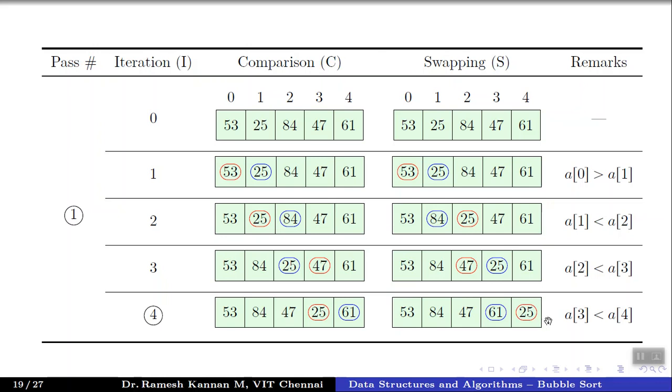In the final first iteration or pass, in ascending order we move the maximum to the right, but in descending order the result of pass one will have the least entry. The 25 is now locked. It's no more in further iterations.